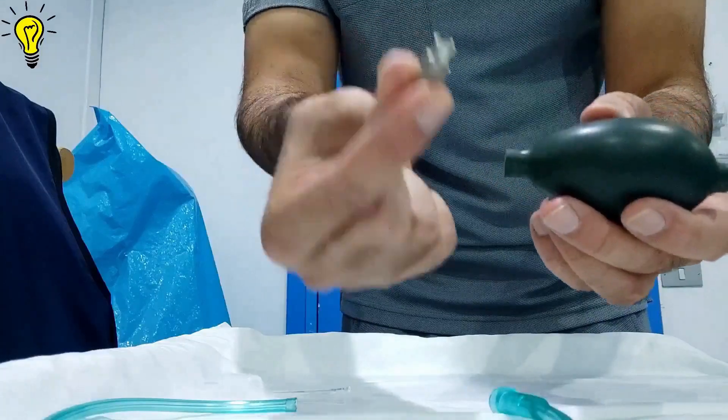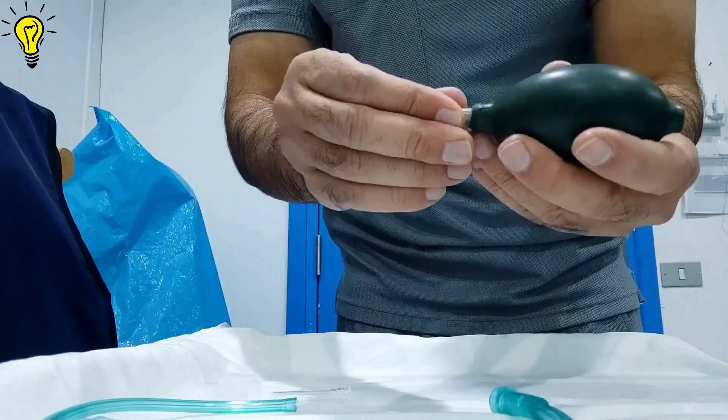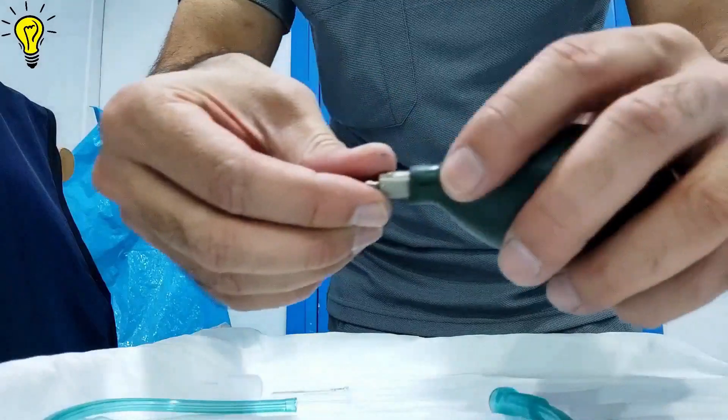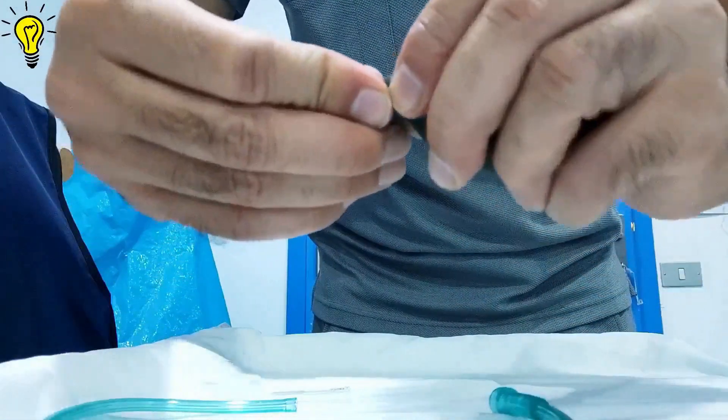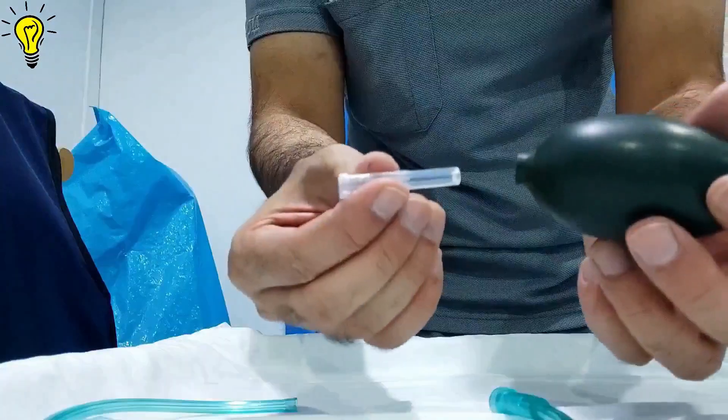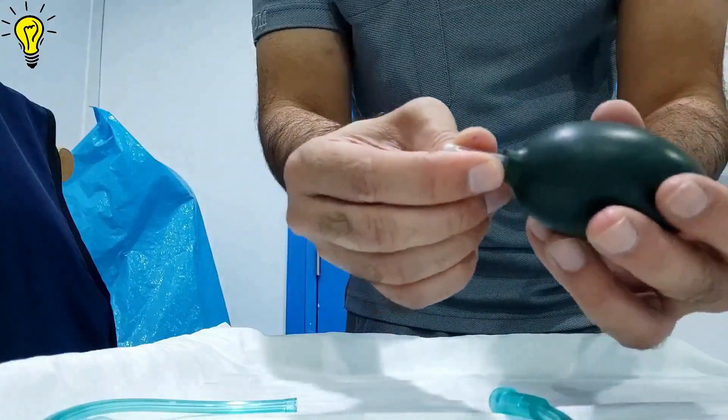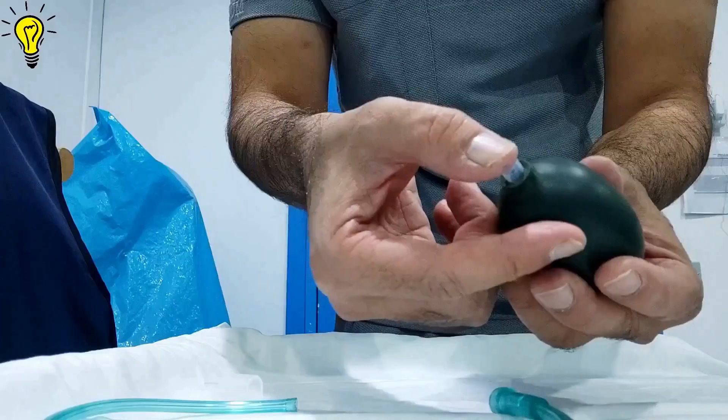Next, insert the nozzle on one end of the cuff. Make sure it's a properly airtight seal. Insert the needle cap on the other side to create an airtight seal.